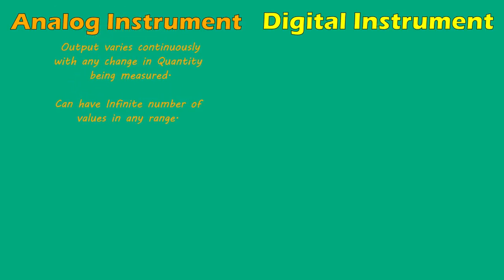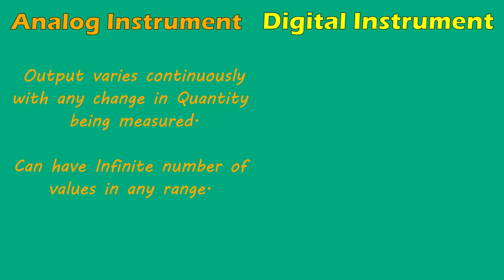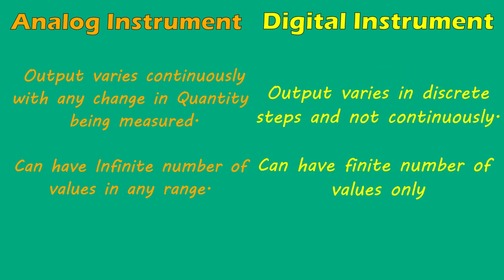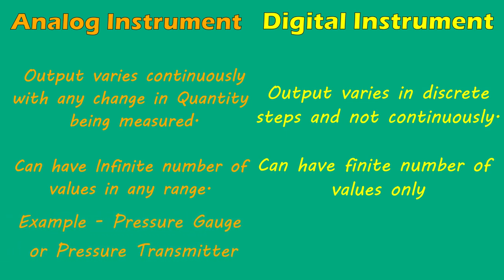Analog and Digital Instruments. Digital instruments are those whose output varies in discrete steps and not continuously, and can have only a finite number of values. An example of an analog instrument is a pressure gauge or pressure transmitter. An example of a digital instrument is a pressure switch. A pressure gauge can have an infinite number of values on the scale with pointer movement, while a pressure switch can have only two values.